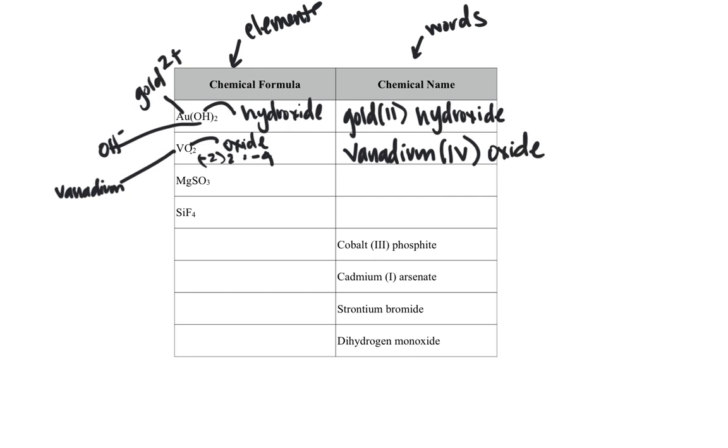So the next one is magnesium, is Mg, and SO3 is a polyatomic ion, which is sulfate, sulfite. And so with magnesium, the trick is to remember that magnesium is not a transition metal, so it does not need the charge in brackets or in parentheses.